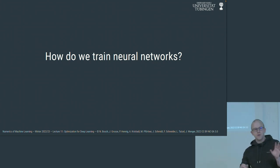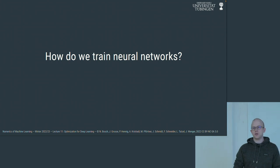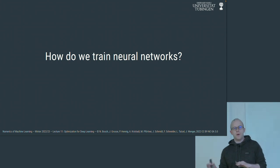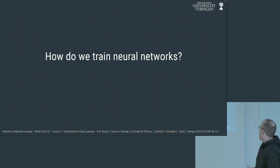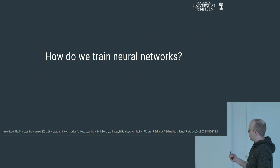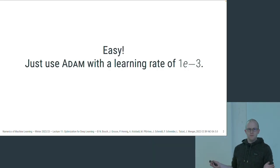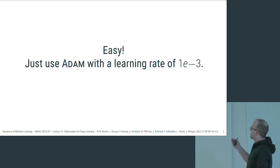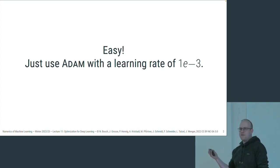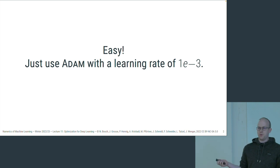Since all of you have trained a neural network, a totally reasonable answer to this question might be: that's easy, I just use Adam with a learning rate of 1e-3 — the default in the Adam paper and in PyTorch — and that always works. Well, I think it's not that easy.